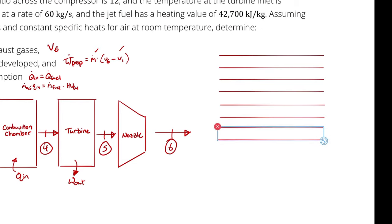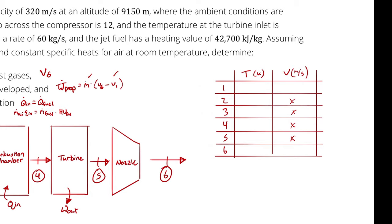Table time. Note that I've put X's through V2, V3, V4, and V5 because I don't actually care about those velocities — I'm treating them as essentially zero. When talking about kinetic energy terms, we're dealing with velocity squared. Relative to 320 meters per second squared, even a relatively quick 5 meters per second squared — which is 25 — is insignificant compared to 320² which is much, much larger. So all we really care about are V1 and V6.